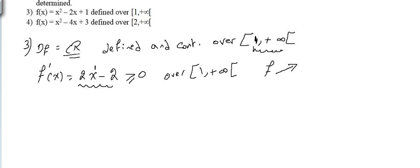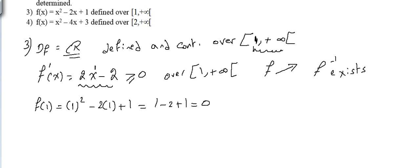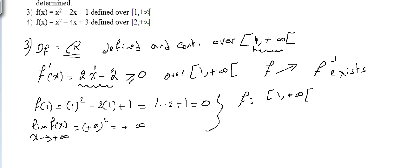Since f is strictly increasing, f inverse exists. Before finding it, we calculate f(1): substituting 1 into f(x) gives 1 - 2 + 1 = 0. We can't substitute infinity, so we take the limit of f(x) as x → +∞. The dominant term x² gives +∞. So f maps [1, +∞) to [0, +∞).